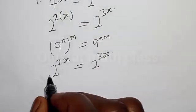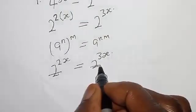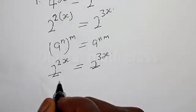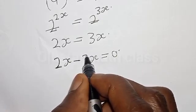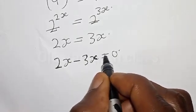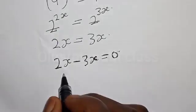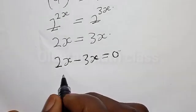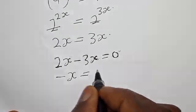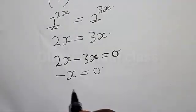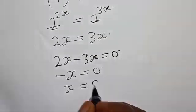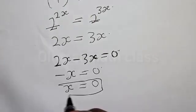Now they have the same base, so the bases cancel. We are left with 2s equal to 3s, which gives us 2s minus 3s equal to 0. That is negative s equals 0. Therefore, s is equal to 0. That is our answer.